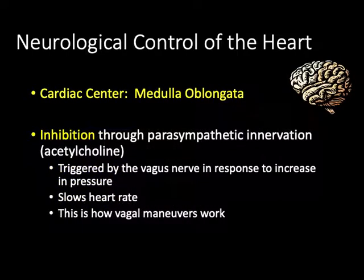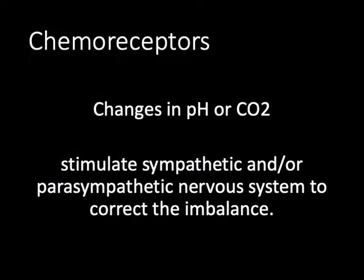When the body senses a need to slow down and reduce pressure, the vagus nerve is triggered to release acetylcholine and slow the heart rate. This is also how vagal maneuvers work — techniques designed to stimulate the vagus nerve and cause that acetylcholine release to slow a tachycardia. The chemoreceptors in the carotid artery and aortic bodies sense changes in pH and CO2, and in response they stimulate the sympathetic or parasympathetic nervous system to correct the imbalance.